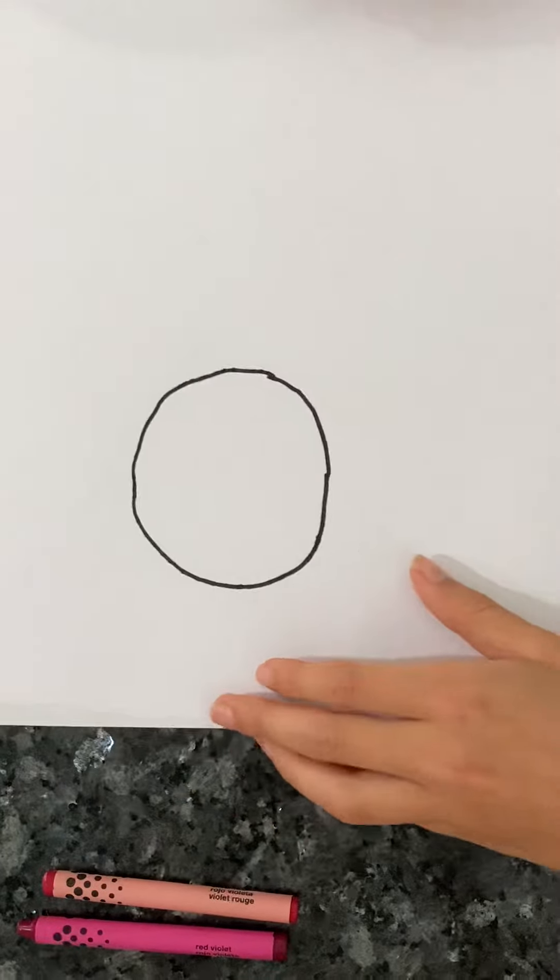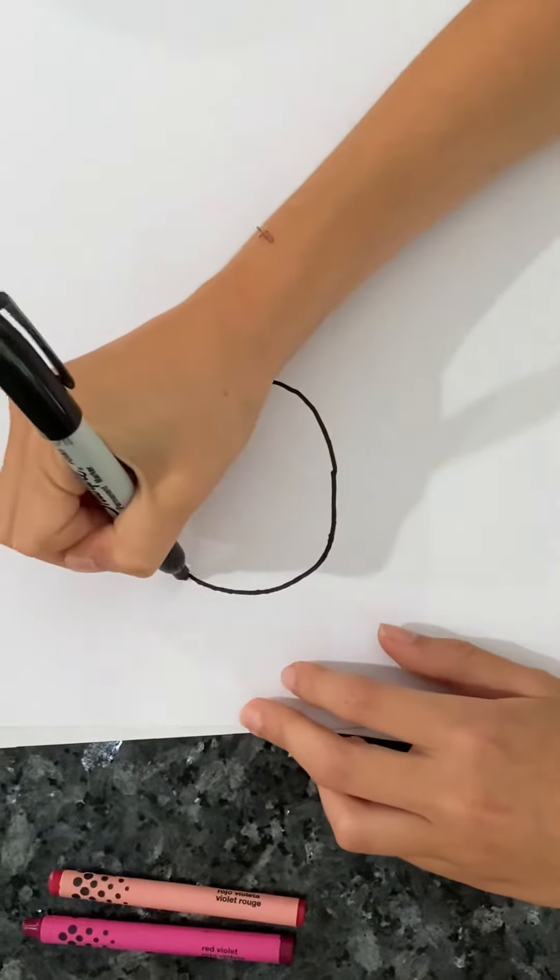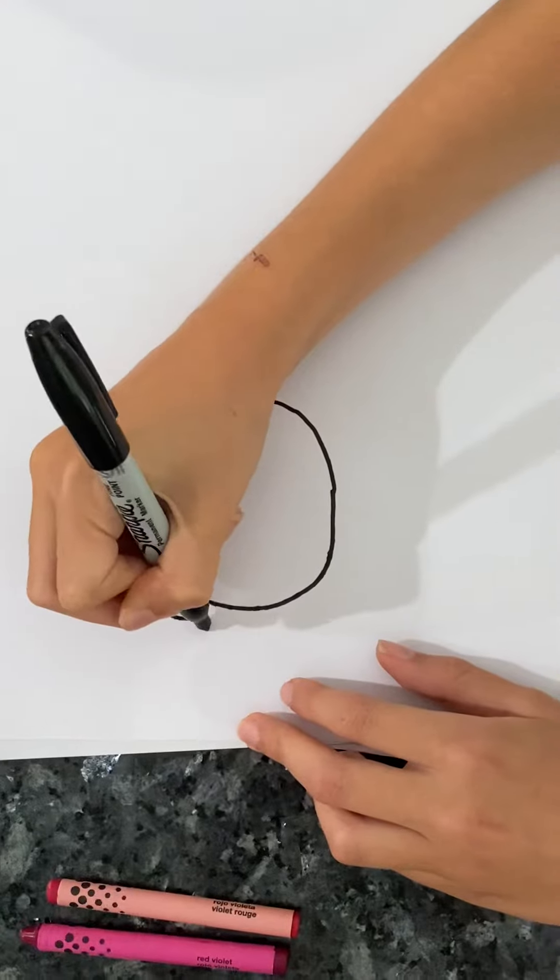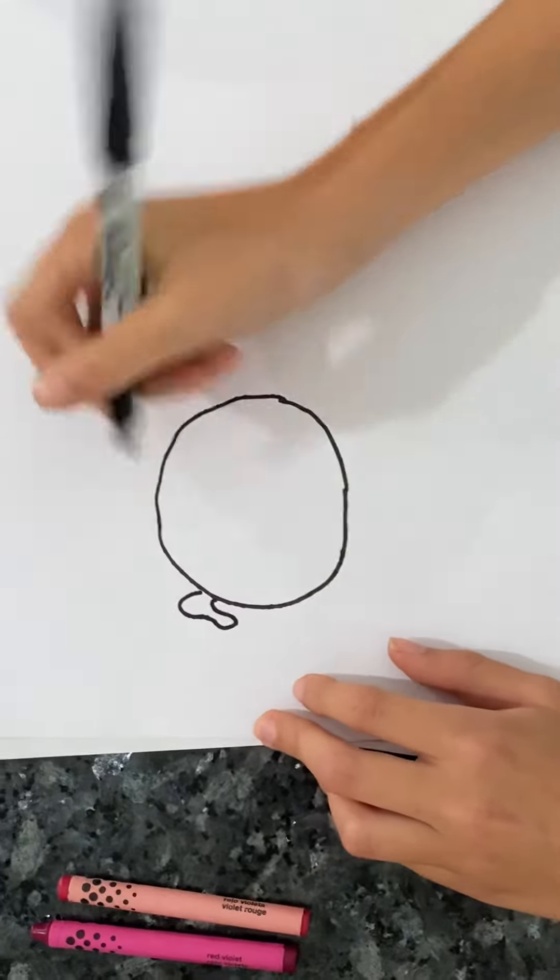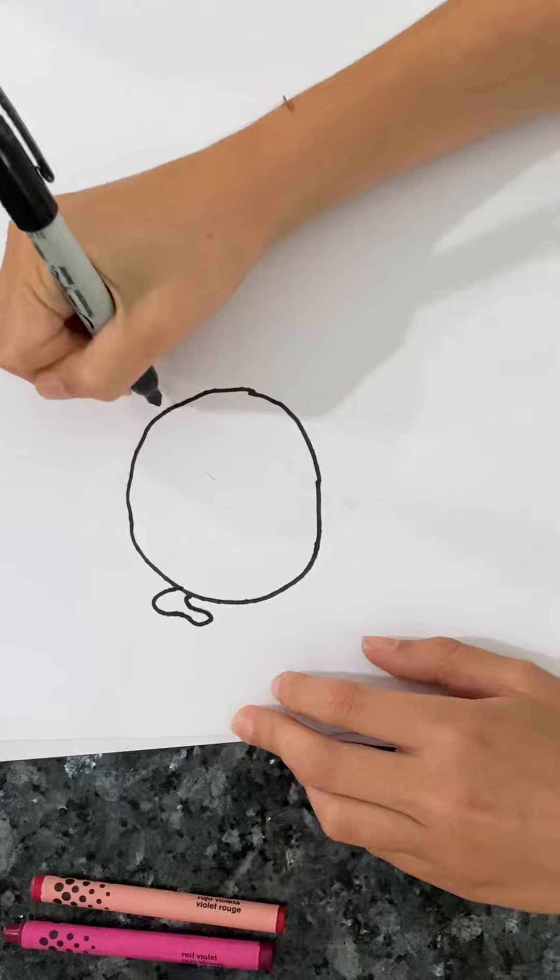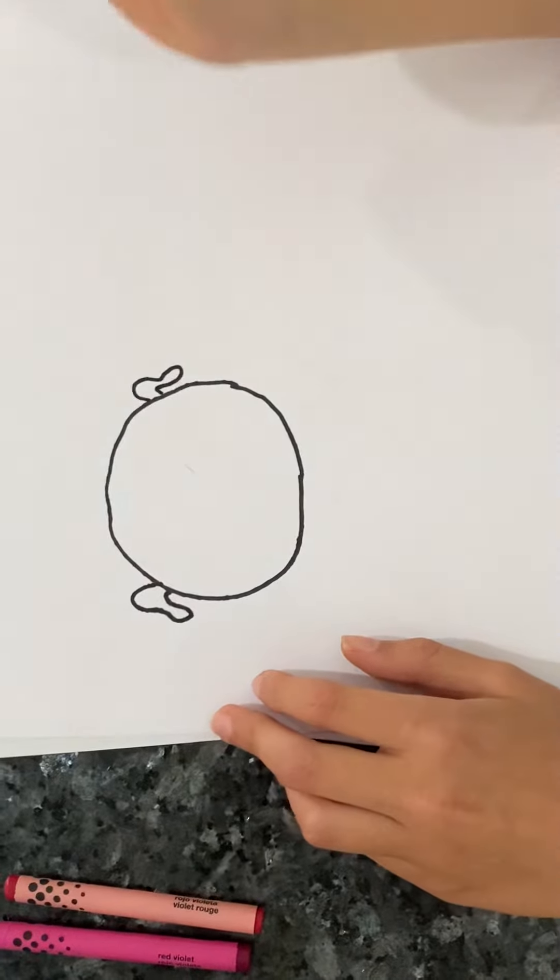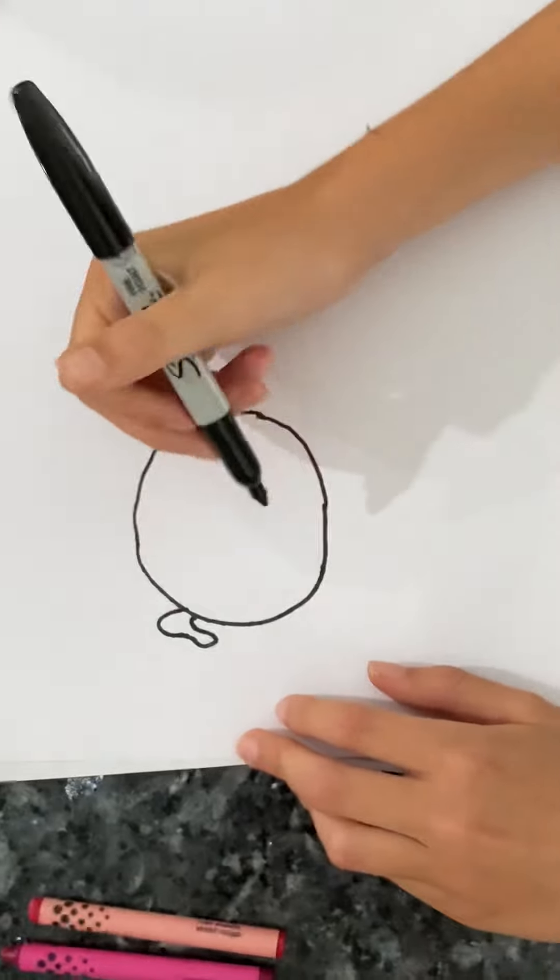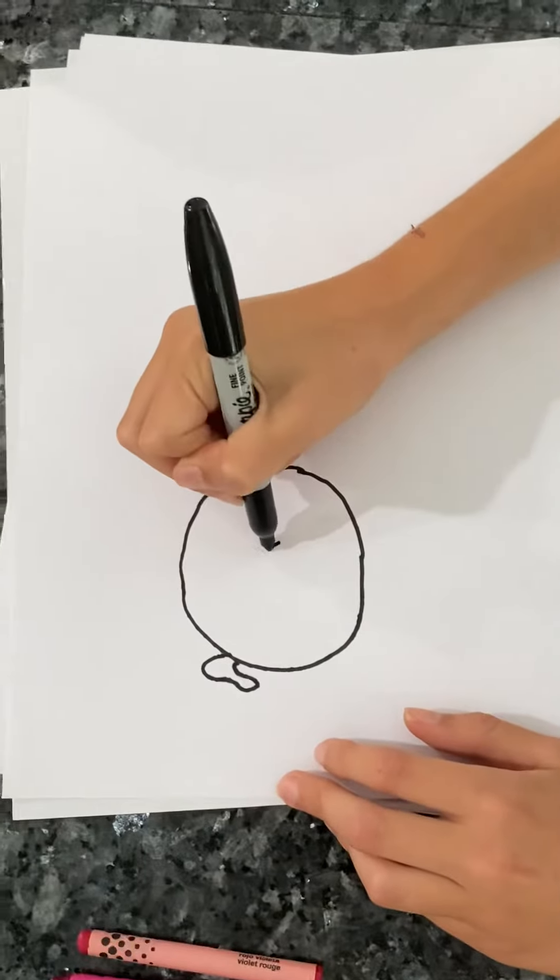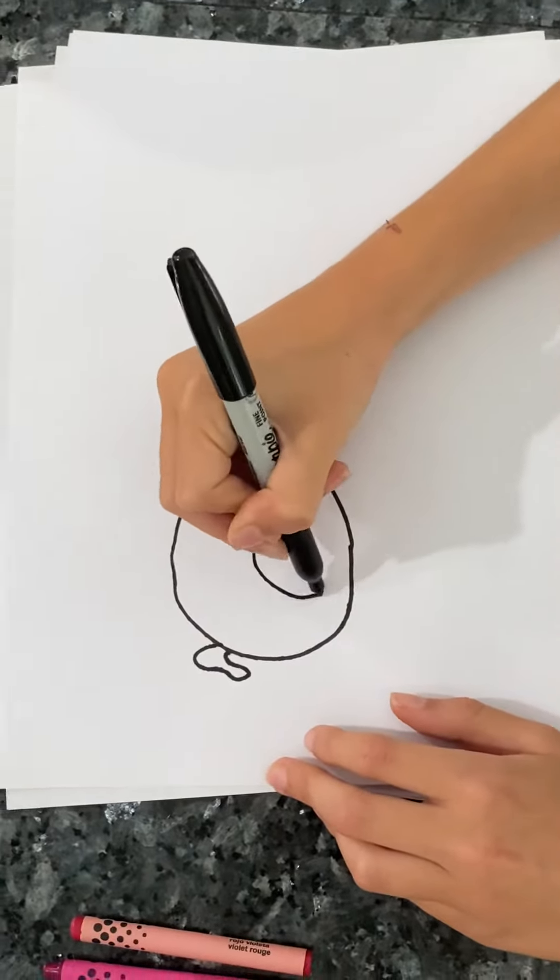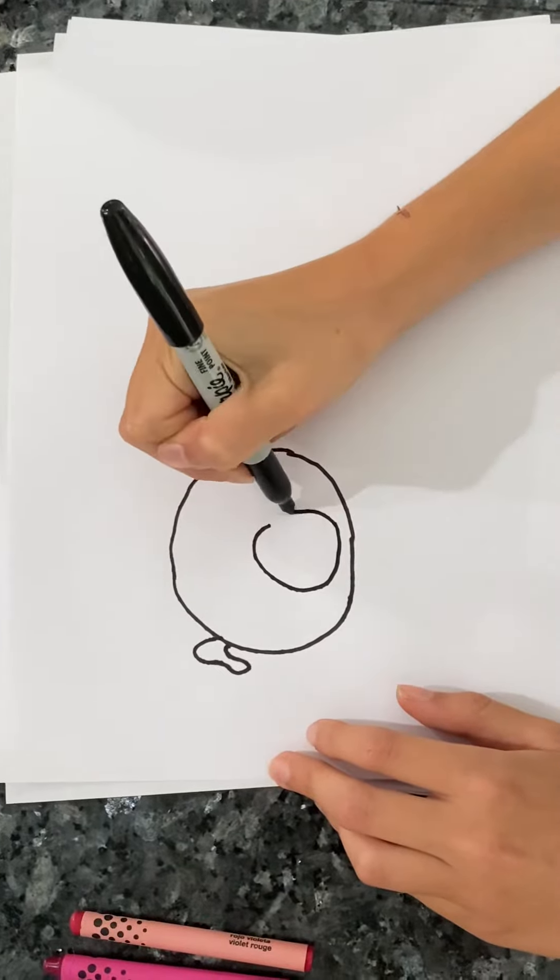Okay, now we need to draw the ears. So they're just almost kind of like dog ears except they're for pigs. So we'll do that on both sides and now we have to draw the snout. It's a big snout right there.